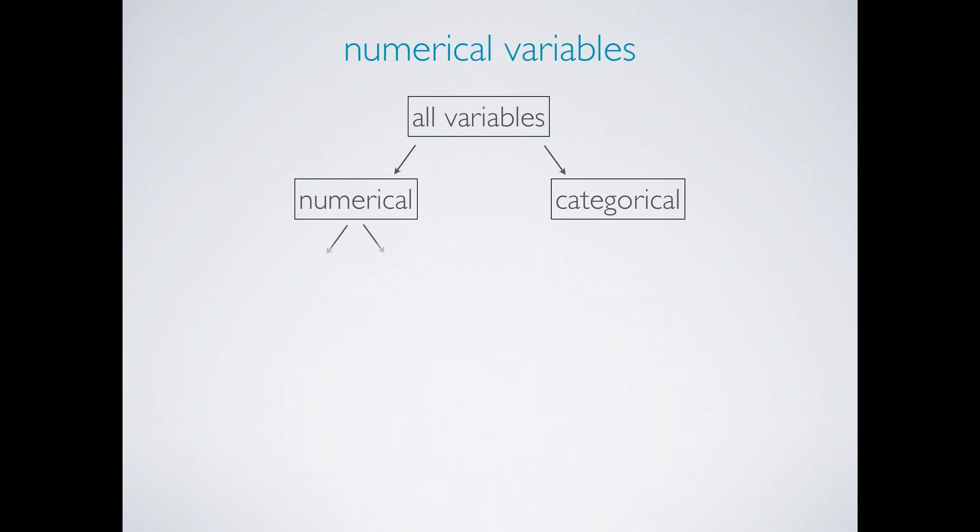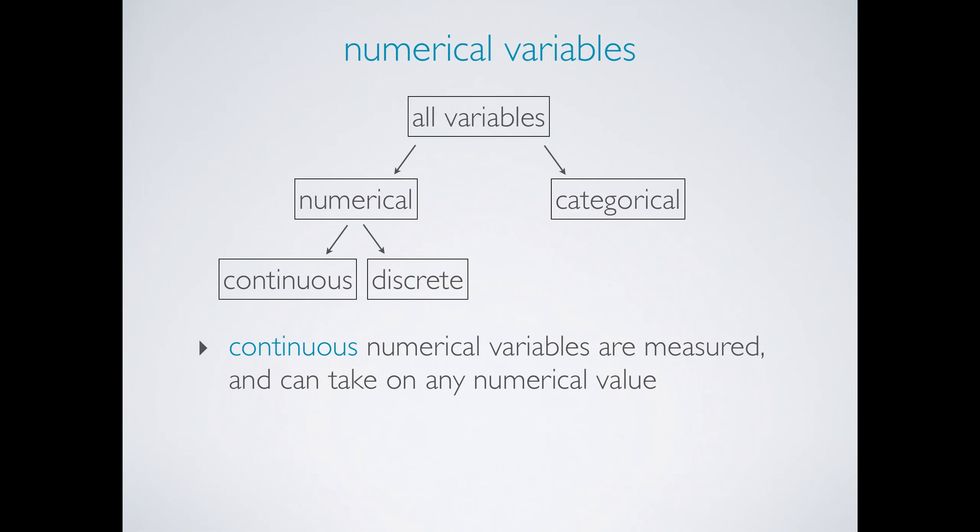Numerical variables can be further categorized as continuous or discrete. Continuous numerical variables are usually measured, such as height, and they can take on any numerical value. While we tend to round our height when we report it, it is actually measured on a continuous scale.